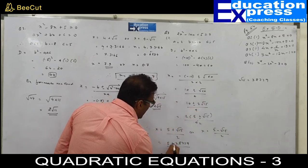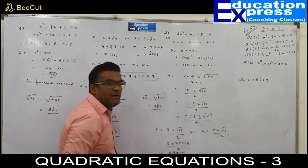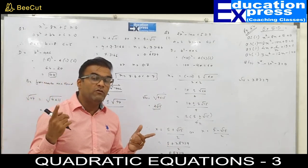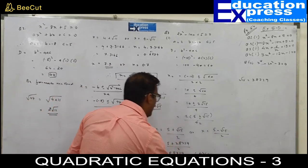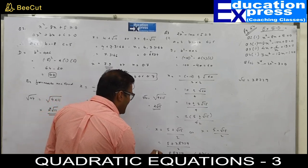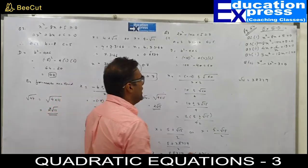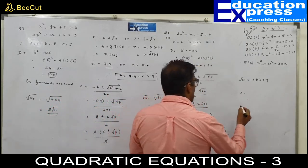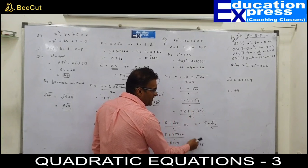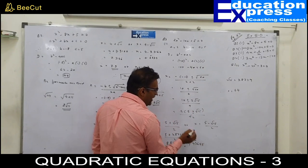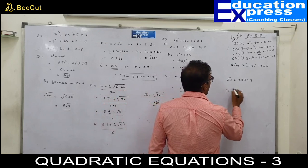That makes 8.8729 upon 2, which gives 4.43645. They are asking us to adjust up to 2 decimals. So checking: 4.43, the next digit is 6 which is 5 or more, so this rounds up by 1. My answer would be 4.44. This is the final answer for the first root.